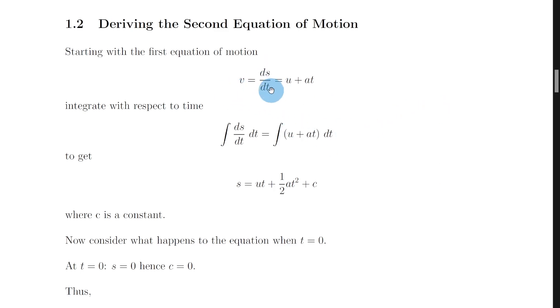So we've got v equals ds by dt but we also know that v is equal to u plus at. So now we can say that ds by dt is equal to u plus at and we can just ignore this v on the left hand side now.